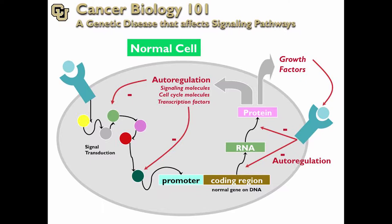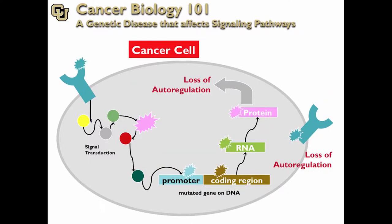A normal cell is basically a signaling machine receiving signals from the outside, transducing those signals that then regulate gene expression via promoter, making RNA. The RNA is then translated into proteins, and proteins auto-regulate this as well as release growth factors that can stimulate itself through auto-regulation or other cells through paracrine regulation. Cancer is a genetic disease — fundamentally, it's a genetic disease.